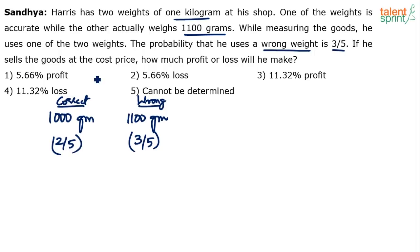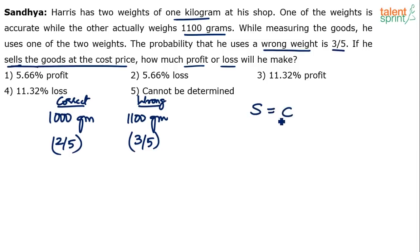He is selling the goods at the cost price, which means selling price equals cost price. Normally when selling price equals cost price, you make no profit and no loss. However, if that's the case, then why do we say the answer will result in a loss? Because he is going to lose in terms of the quantity that he gives, as against the required quantity.